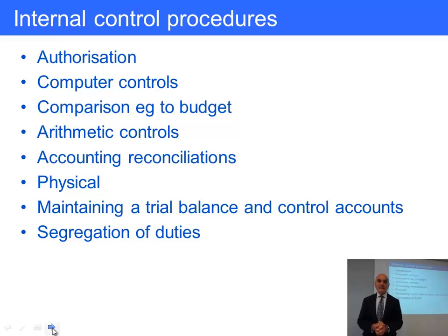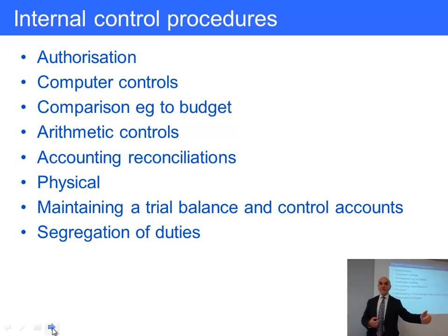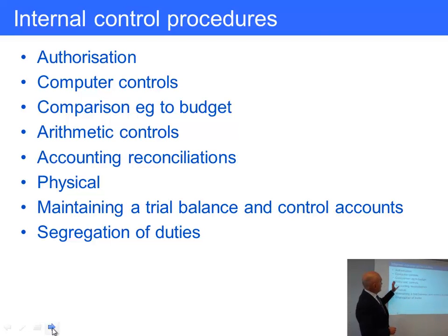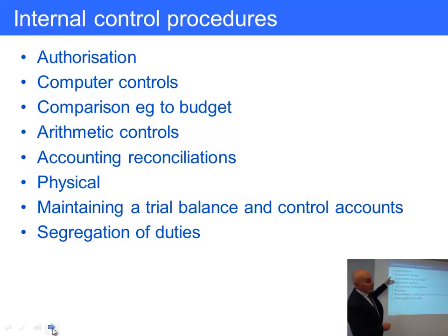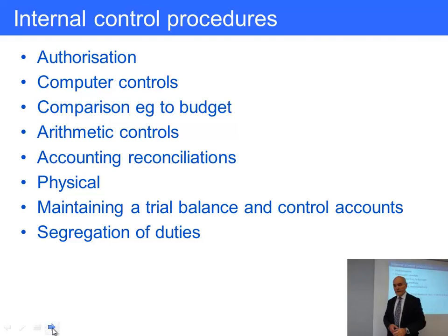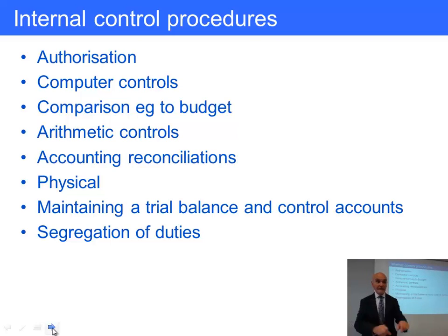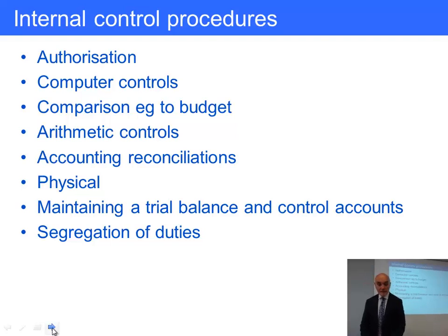Arithmetic controls: you get an invoice from a supplier — how do you know they've made it out correctly? You've bought 35 units at $71 each; you want to make sure 35 × 71 is the figure on the invoice, and that the sales tax percentage has been added correctly. This is perhaps less critical now that computers handle it, but still worth checking. For complex manual wage calculations, an internal control might be to have one person calculate and another double-check the result.